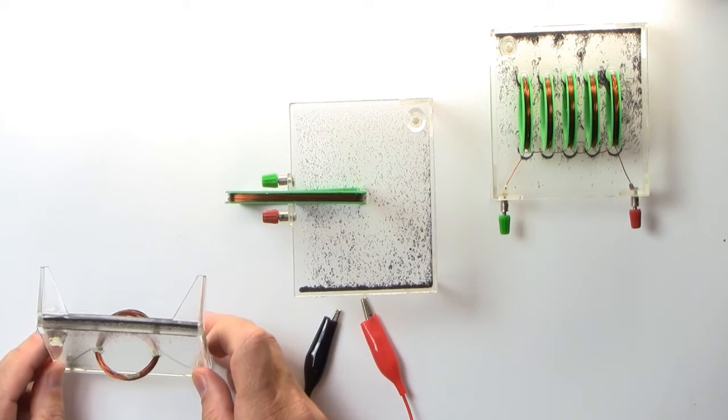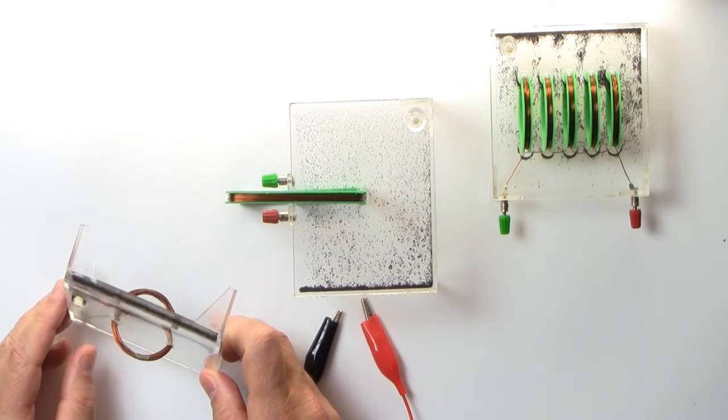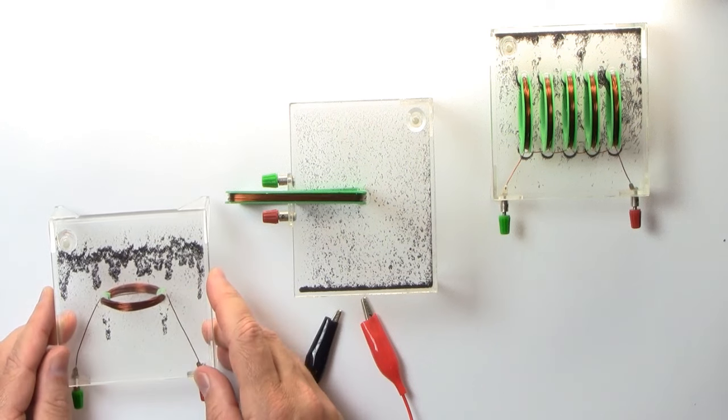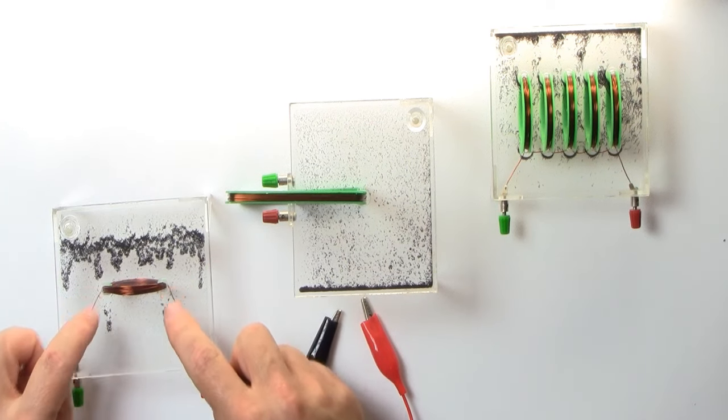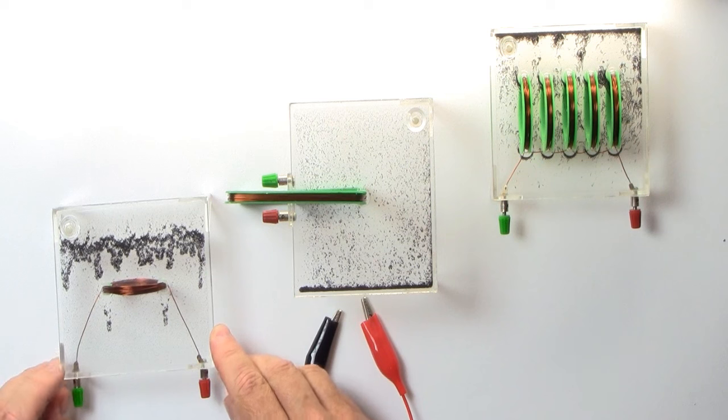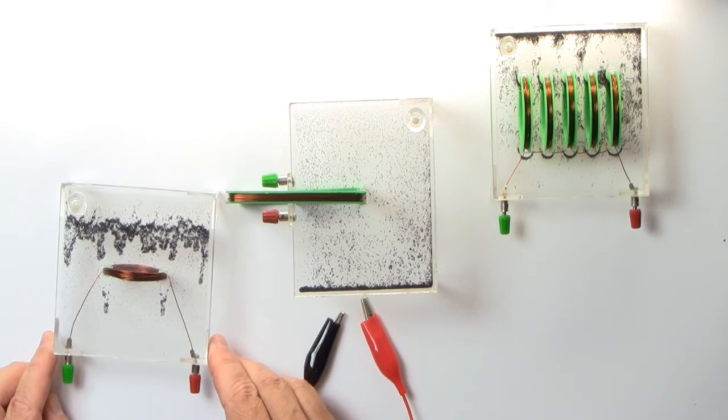This one here is actually just a simple coil and it's 15 turns of wire, and you can see the two wires coming down there and they're terminated on these posts here.